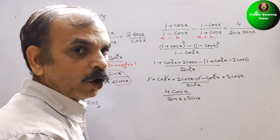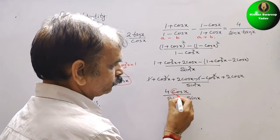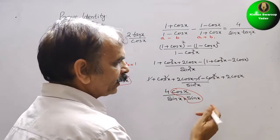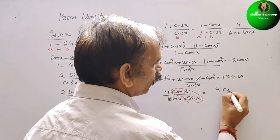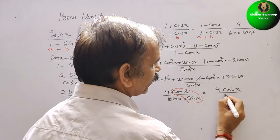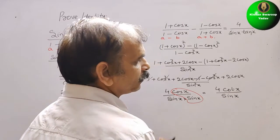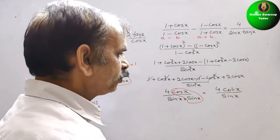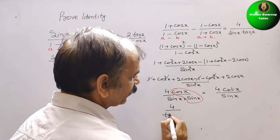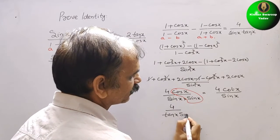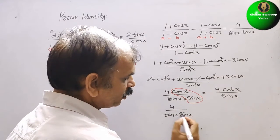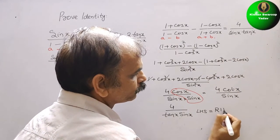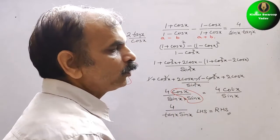So now cos x / sin x is cot x. So we write 4 cot x / sin x. And we know that cot x = 1 / tan x, so we get 4 / (tan x × sin x). This is your LHS and the RHS is also the same. So like this we have to do it.